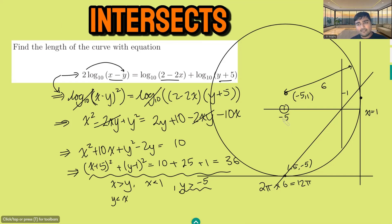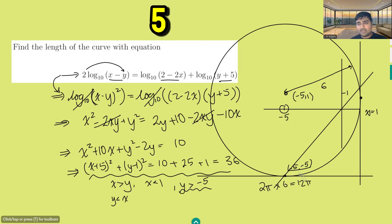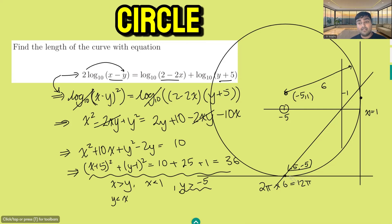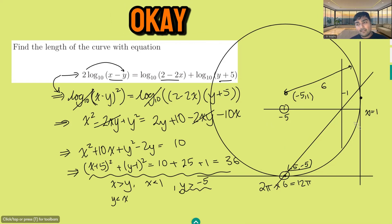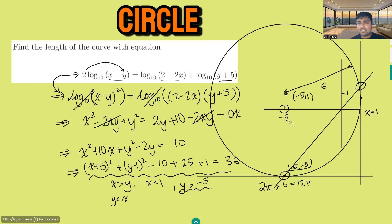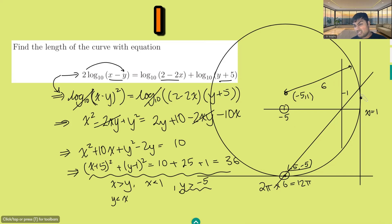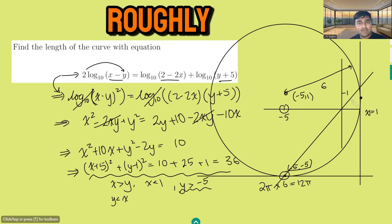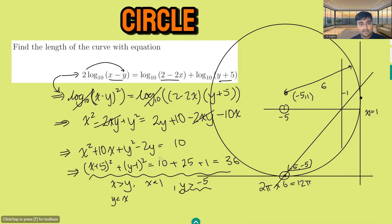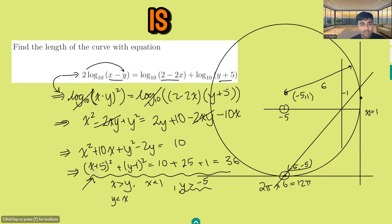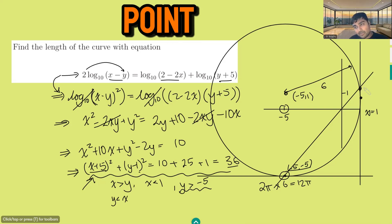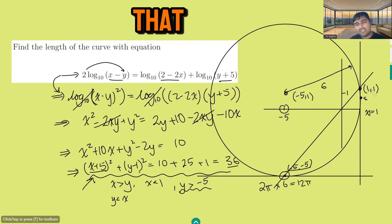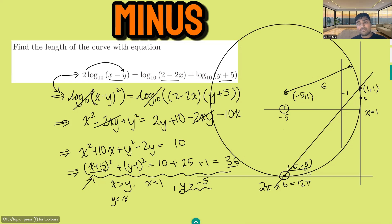Let's find where the line y equals x intersects the circle. It looks like one intersection is at (minus 5, minus 5) — and we can verify: x equals y there, so that point lies on the line, and we can check it satisfies the circle equation. The other intersection appears to be around (1, 1). Checking: (1 plus 5) squared is 36, and (1 minus 1) squared is 0, so 36 plus 0 equals 36. Yes — this point is indeed (1, 1). So the line y equals x intersects the circle at (1, 1) and (minus 5, minus 5).